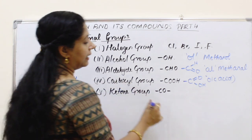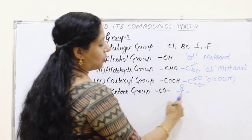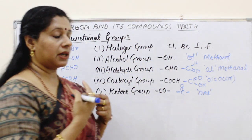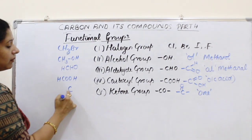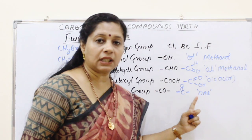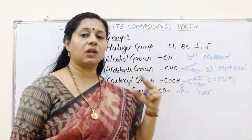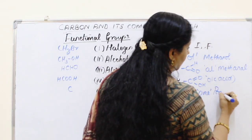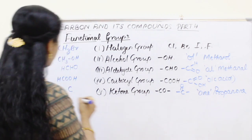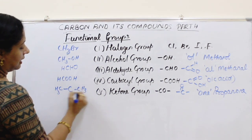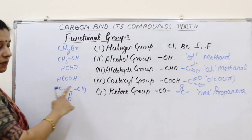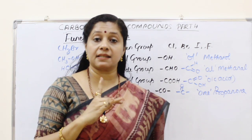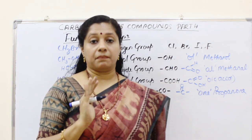The ketone group has a slight difference. The carbonyl carbon must be attached to two other carbon atoms on both sides. So the name ends with '-one'. Methanone and ethanone do not exist because they do not have the minimum three carbon atoms required. The simplest ketone is propanone: CH3–CO–CH3, where the CO group sits between two carbon atoms. From three carbons onwards, butanone, pentanone, hexanone can exist. A very important point: the simplest ketone is propanone.